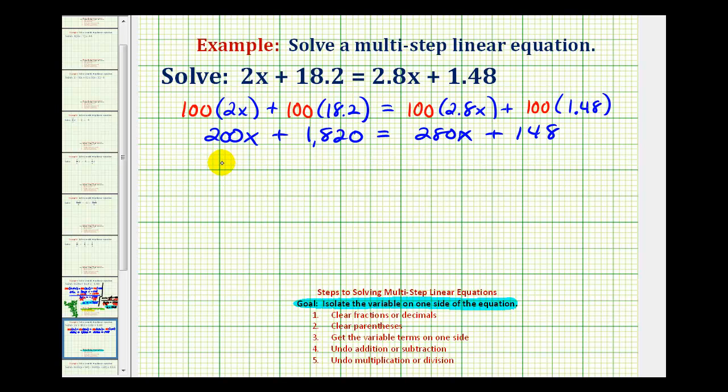Notice if we subtract 200x on both sides, we would have a positive x term on the right side, and if we subtracted 280x on both sides, we'd have a negative x term on the left side. It doesn't matter which method we use, but since most people prefer to have the variable term on the left side, I'm going to go ahead and subtract 280x on both sides.